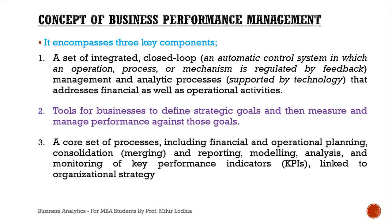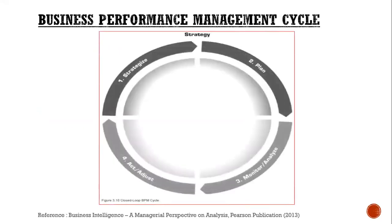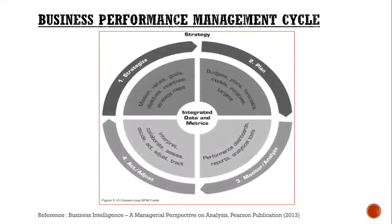Now let's understand the concept of the business performance management cycle. The chart shows the cycle of business performance management, which indicates four stages: strategize, plan, monitor and analyze, and act and adjust.